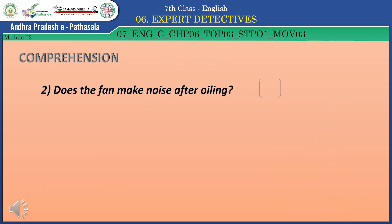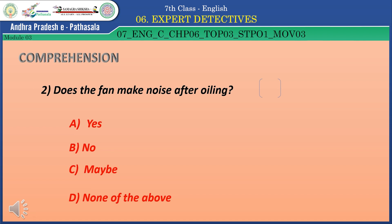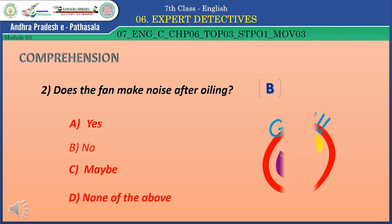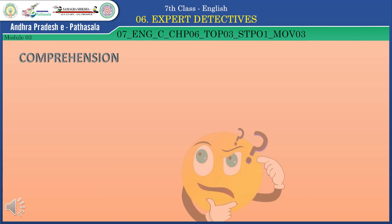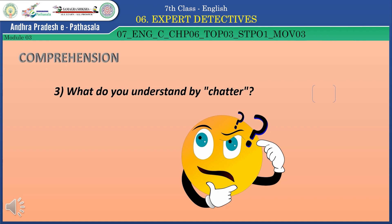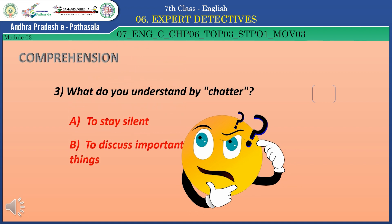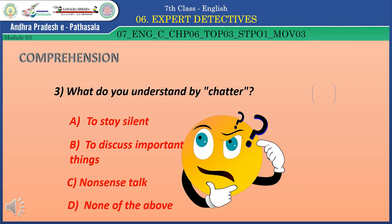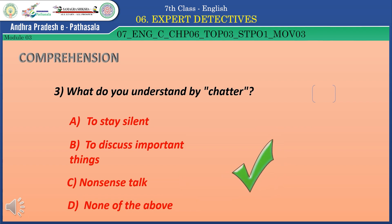Question 2: Does the fan make noise after oiling? Option A: Yes. Option B: No. Option C: Maybe. Option D: Not there. The correct answer is Option B — No. Question 3: What do you understand by 'chatter'? Option A: To stay silent. Option B: To discuss important things. Option C: Nonsense talk. Option D: None of the above. The correct answer is Option C — nonsense talk.